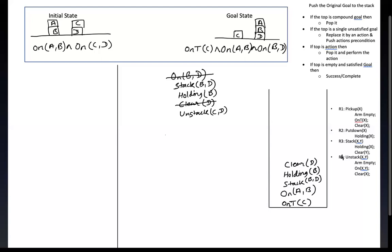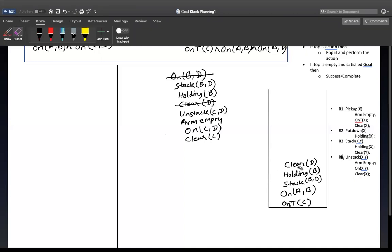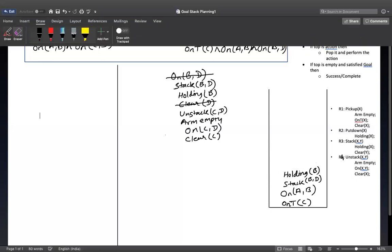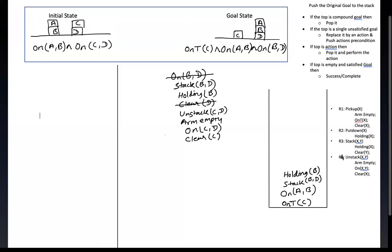We have to unstack c from d — unstack(c, d) — and then d will be clear. What are the preconditions of unstack? First, the arm should be empty. Second, on(c, d). Third, clear c. I have written these. Now I erase the old entry and write the action unstack(c, d) with its preconditions.